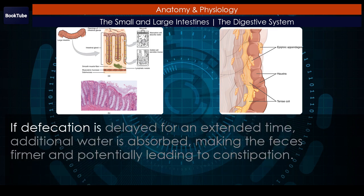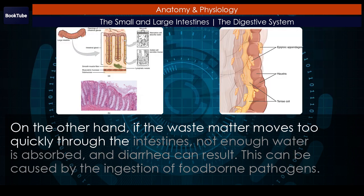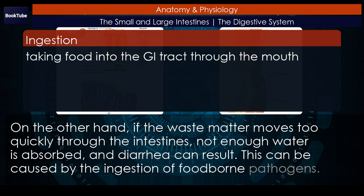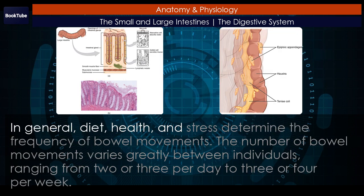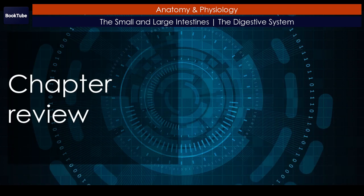If defecation is delayed for an extended time, additional water is absorbed, making the feces firmer and potentially leading to constipation. On the other hand, if waste matter moves too quickly through the intestines, not enough water is absorbed and diarrhea can result. This can be caused by the ingestion of foodborne pathogens. In general, diet, health, and stress determine the frequency of bowel movements. The number of bowel movements varies greatly between individuals, ranging from 2 or 3 per day to 3 or 4 per week.